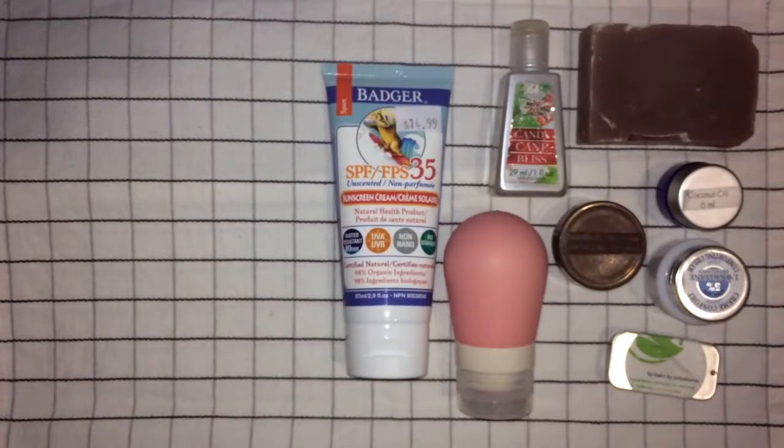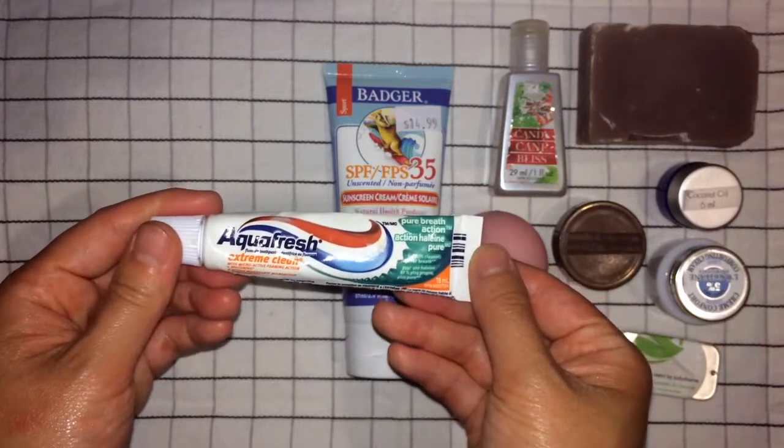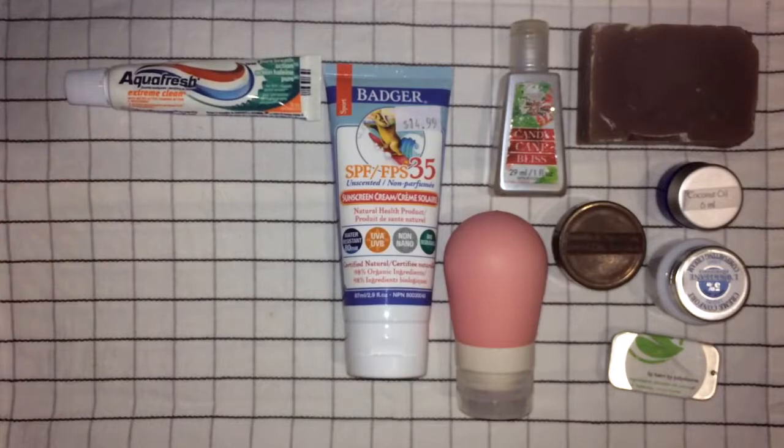I've got conventional toothpaste which is squeezed from my parents' regular size tube at home into this travel sized one. I thought I'd leave my tooth powder at home so I can cross the border with ease. Not sure how strict they are about suspicious looking white powders but I'd rather not find out.